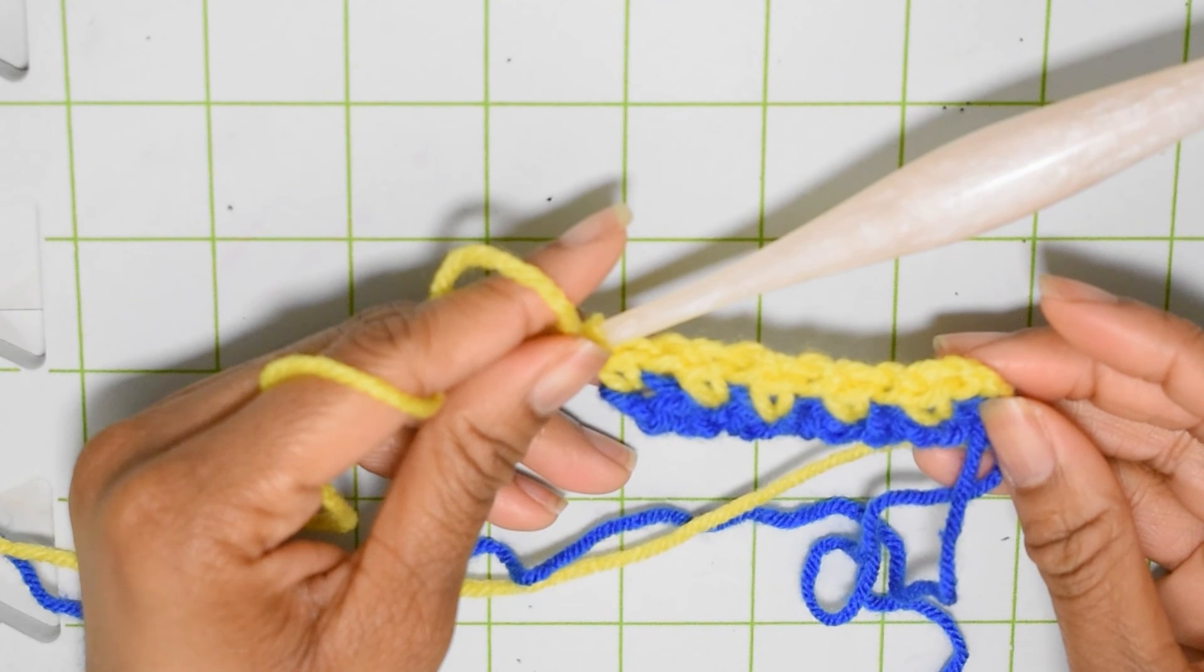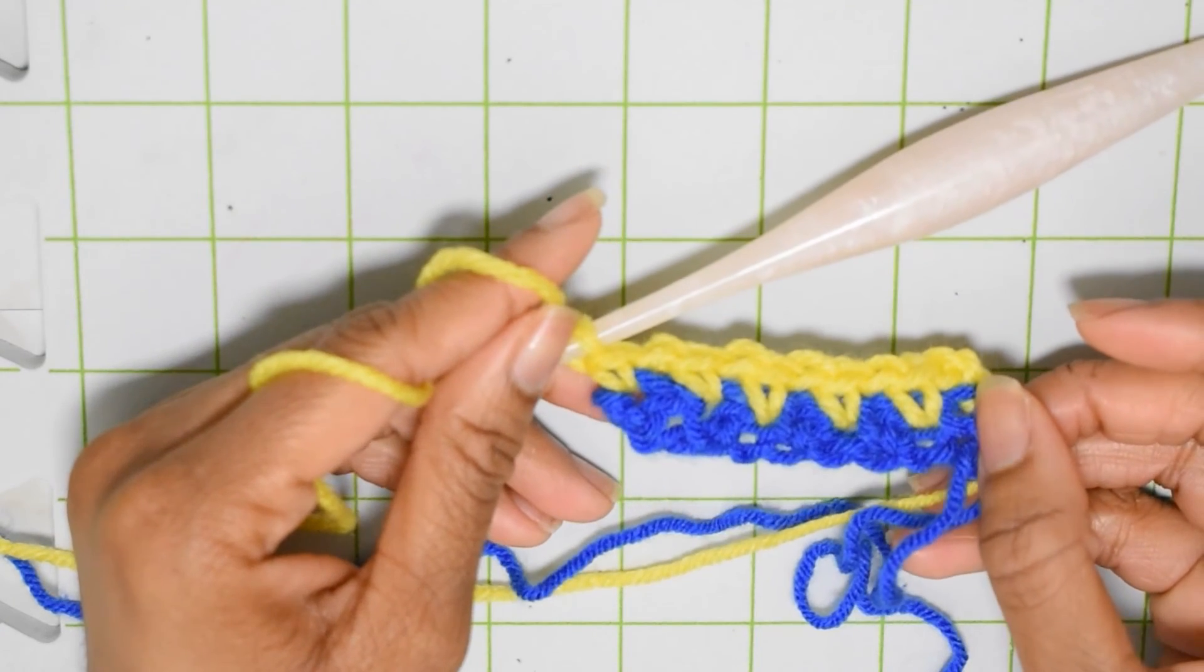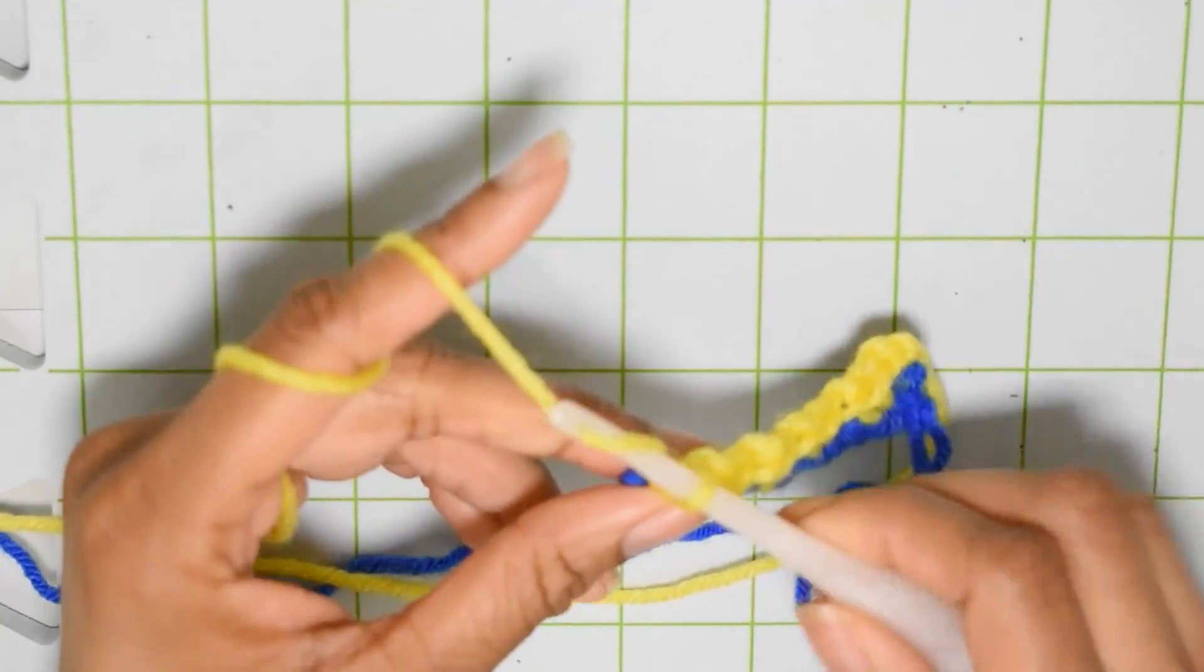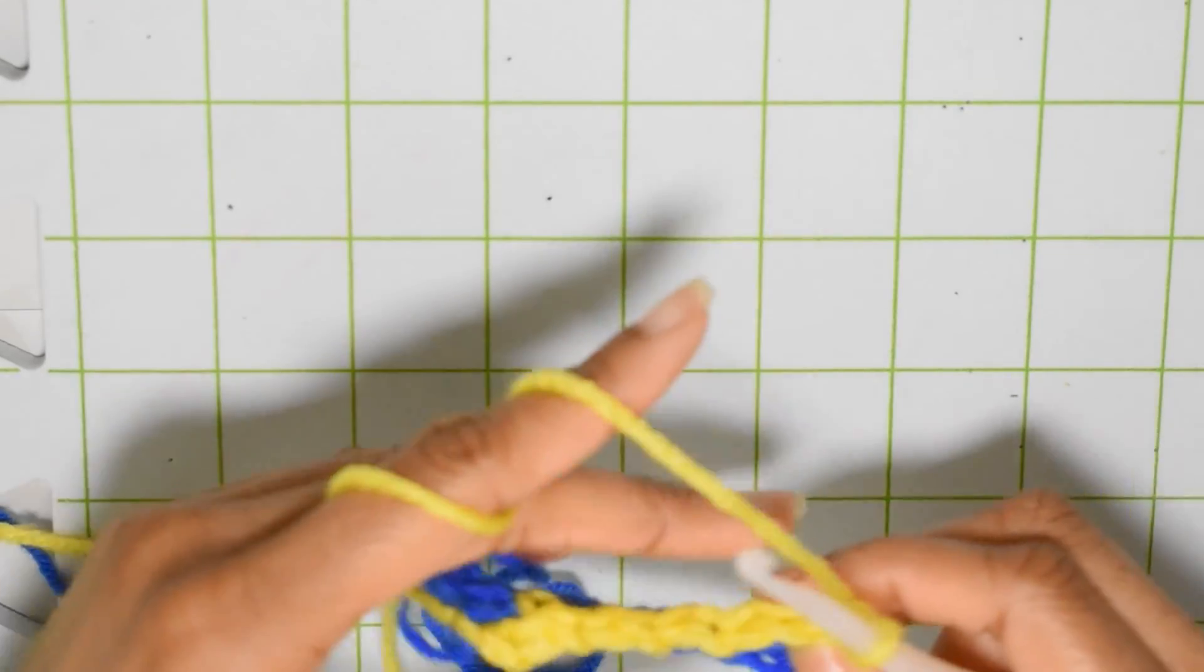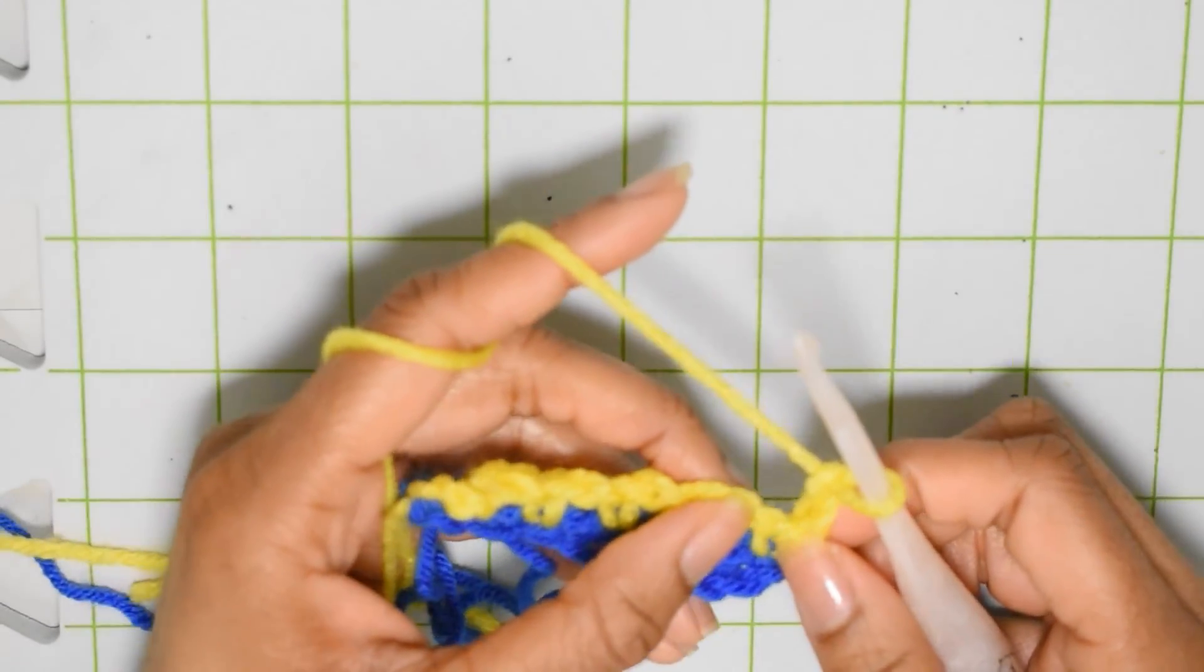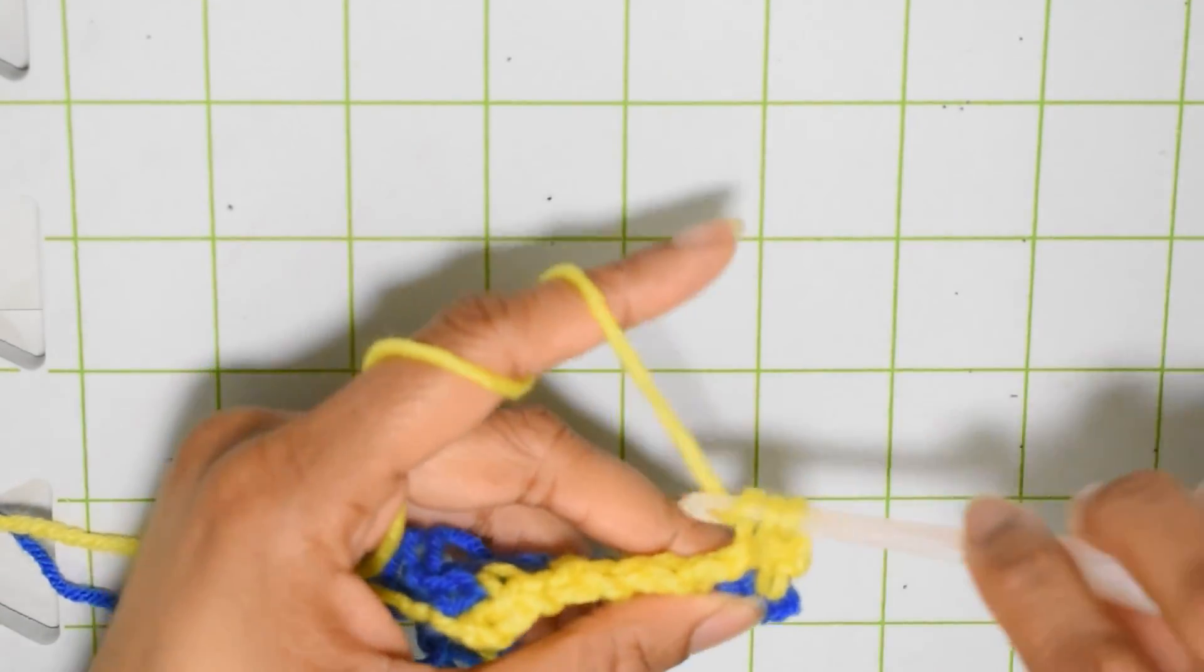Chain one and now we're going to work into that last little chain space from the previous row. And this is it so far, so now I'm going to move on to row three. Row three I'm still going to chain two, turn my work and I'm going to skip this first stitch and work into that first chain space instead with a single crochet.